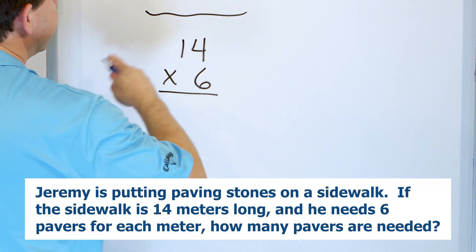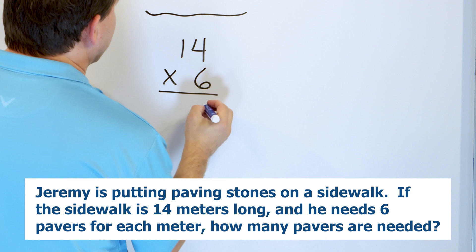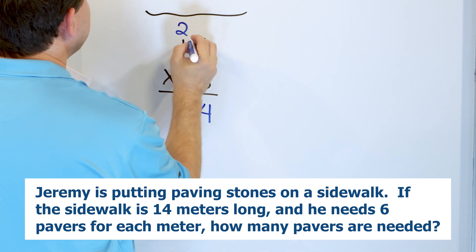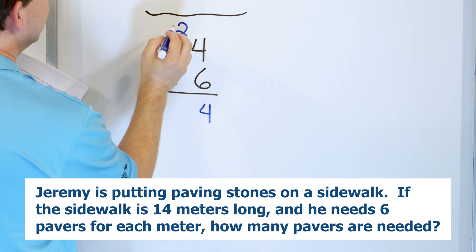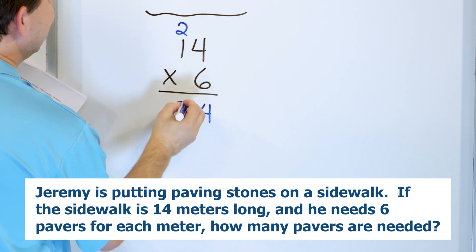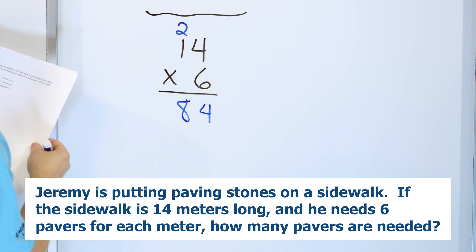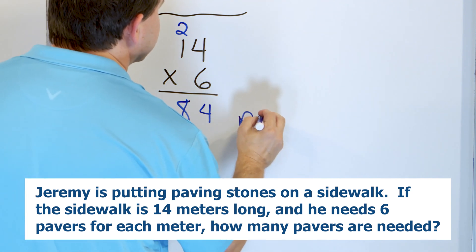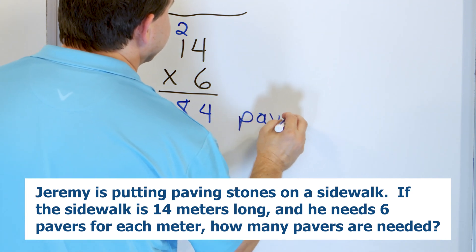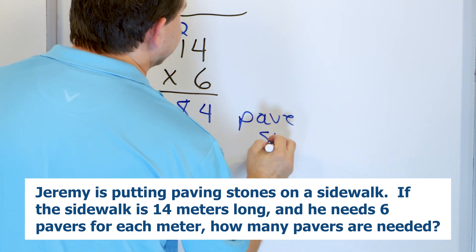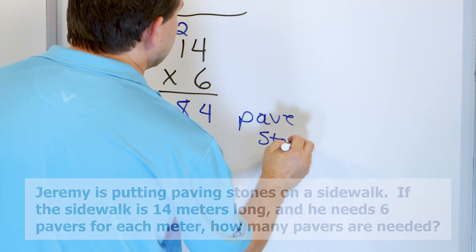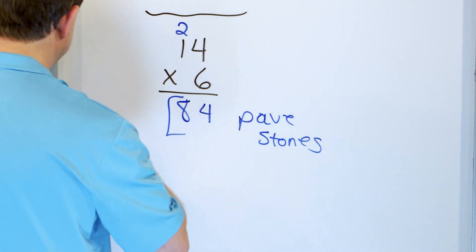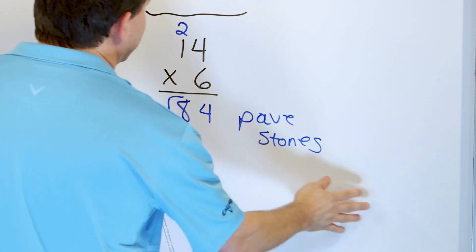Six times four is 24, carry the two. Six times one is six, two more is eight. So the answer is 84 paving stones altogether.